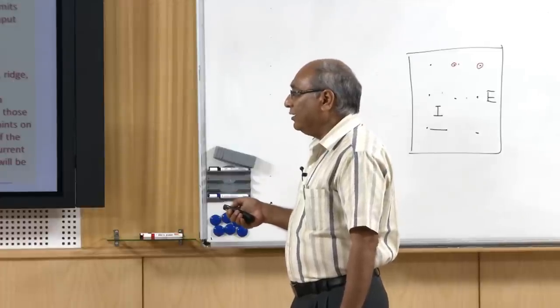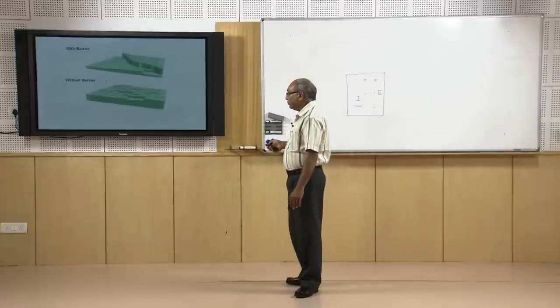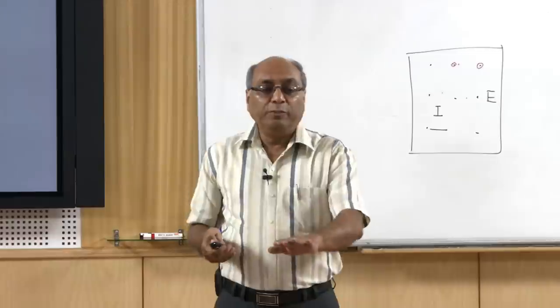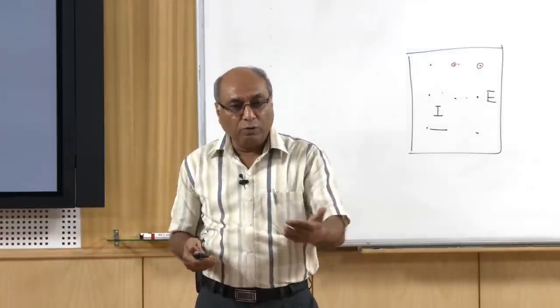A 3D example shows the surface created without barriers as quite smooth, but when a barrier polyline is used as an additional input, an abrupt surface is created. Depending on the phenomenon, if we have information about barriers, we must bring that information into the interpolation to create a surface more close to reality.